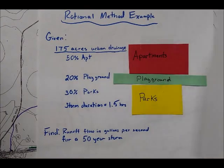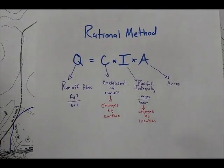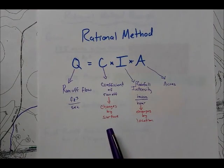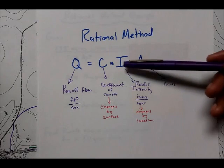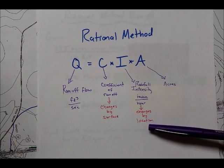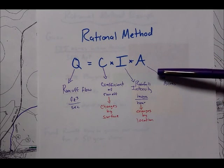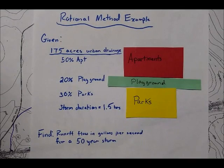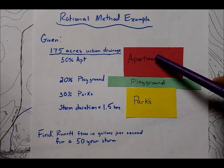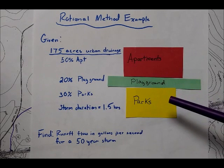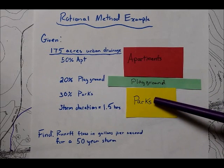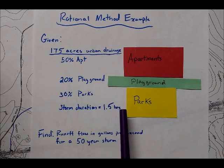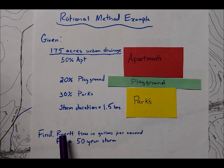Look at an example. And for this example we are going to be using this equation which has Q is equal to the coefficient of runoff which changes by surface times the intensity rainfall intensity which changes by location as you just seen and also the area or representing the acreage. In this example what's given to you is 175 acres of urban drainage has the following makeup. 50% of it is made up of apartments. 20% is made up of playgrounds. And 30% is made up of parks. We know that the storm duration is about 1.5 hours. And we are asked to find the runoff flow.